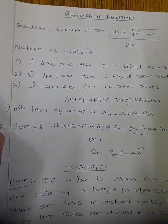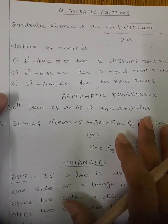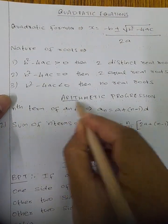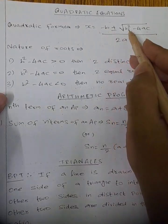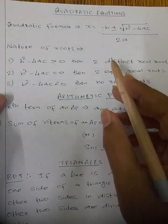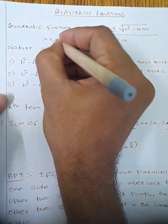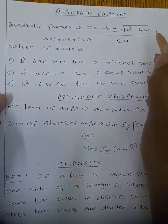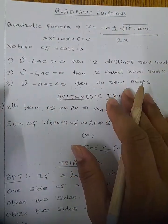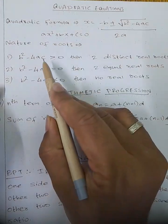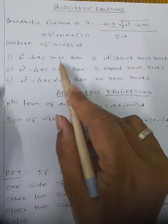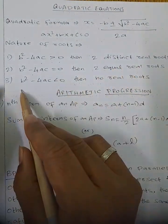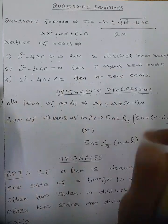Next is the quadratic equation. There are two methods: factorization method and the quadratic formula. The quadratic formula is x equals minus b plus or minus root of b square minus 4ac, divided by 2a, for the equation ax square plus bx plus c equals 0. Nature of roots: if b square minus 4ac is greater than 0, two different real roots; equal to 0, two equal real roots; less than 0, no real roots.